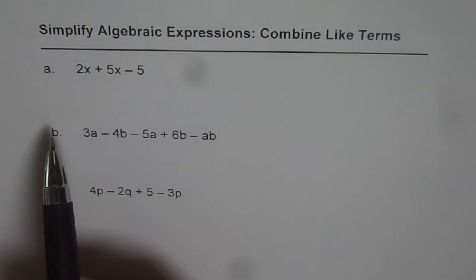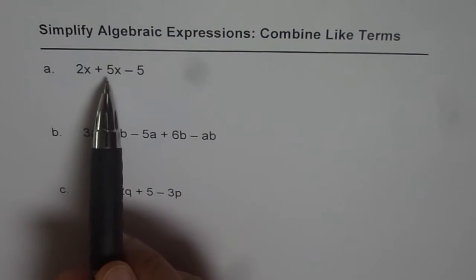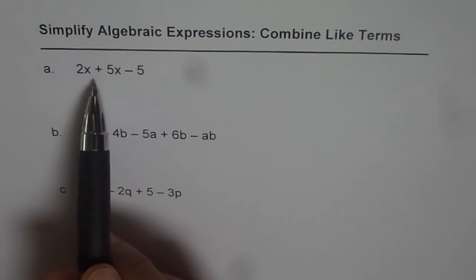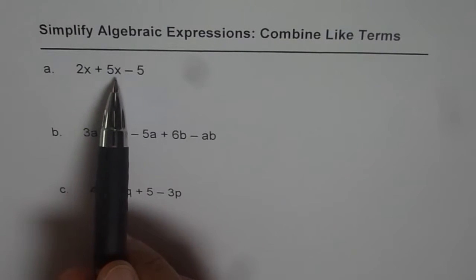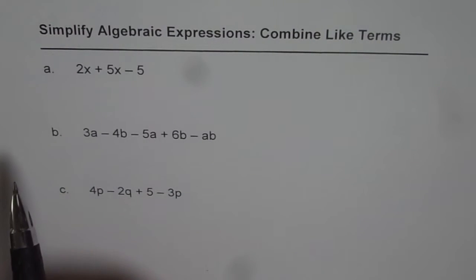Like terms are terms which have the same set of variables. We have three terms here. The first two have x as their variable. 2x and 5x are the like terms.